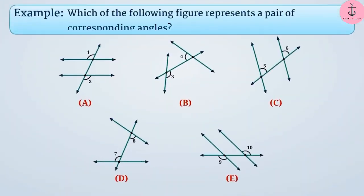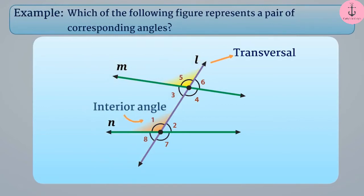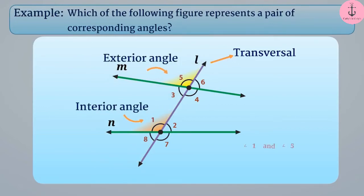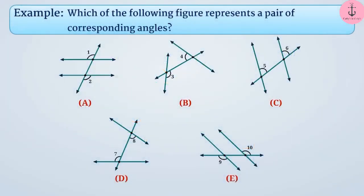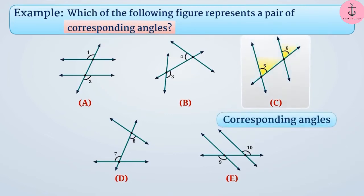Which of the following figures represents a pair of corresponding angles? When two angles have a different vertex, are on the same side of the transversal, and one is an interior angle while the other is an exterior angle, they are called corresponding angles. Corresponding angles are represented in figure C.